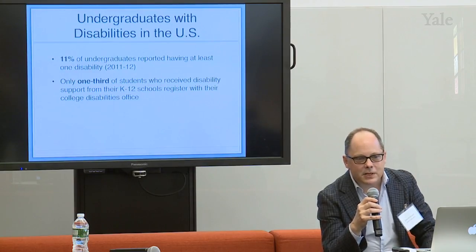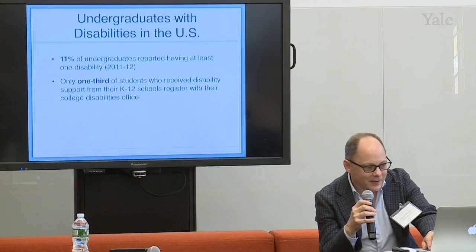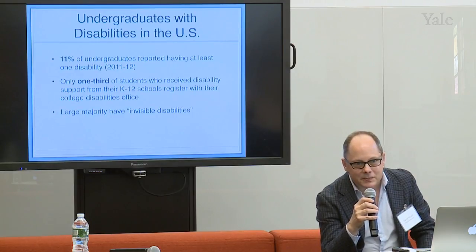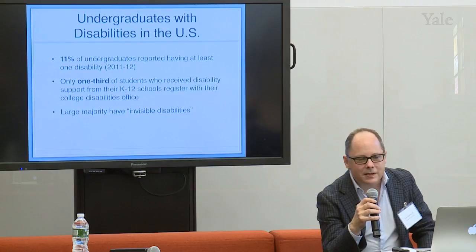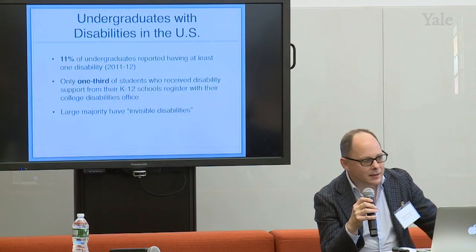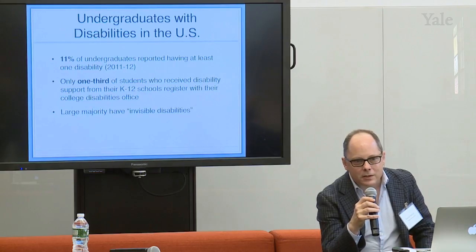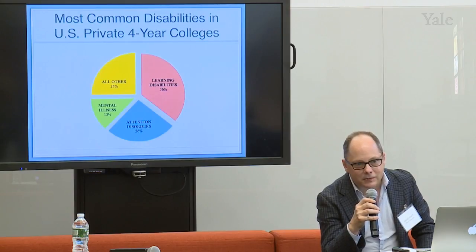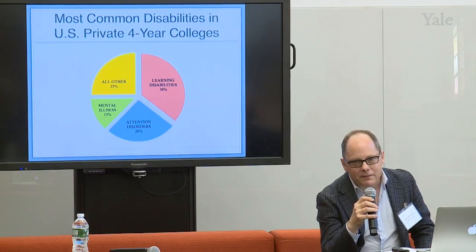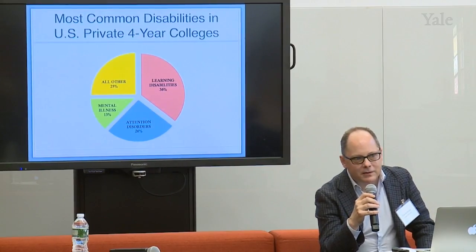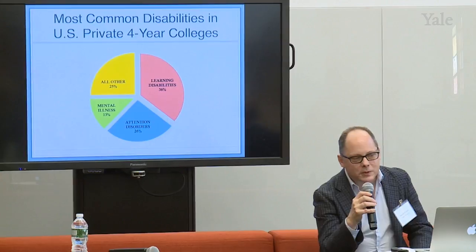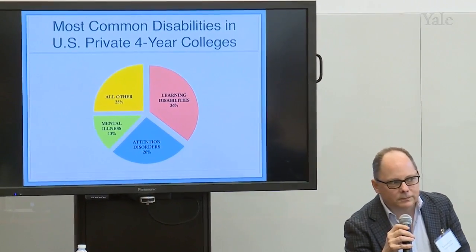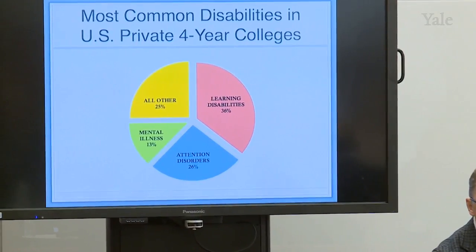In some cases, the students don't even realize that they have a disability. The largest majority of these students have what we might call invisible disabilities. So when we tend to think about disabilities, we imagine a student who's blind and has a guide dog, or we imagine somebody in a wheelchair. But actually, the most common disabilities are largely invisible. I've had the opportunity to speak with a number of Yale faculty over the years about students with disabilities, and oftentimes I've heard them say: "I've been teaching at Yale for 20 years — I don't think I've ever had a student in my class with a disability."